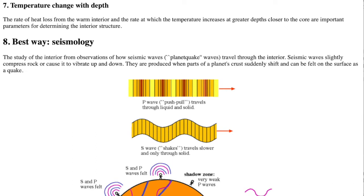The rate of heat loss from the warm interior and the rate at which the temperature increases at greater depths closer to the core are important parameters for determining the interior structure. On the Earth, scientists can drill several kilometers into the crust and measure the temperature difference. The Mars InSight lander was supposed to bore a temperature probe almost 5 meters into Mars' surface, but it wasn't able to bore down far enough.